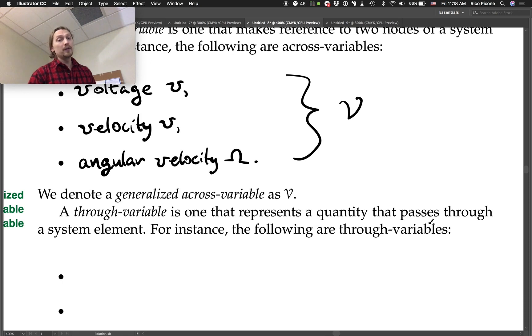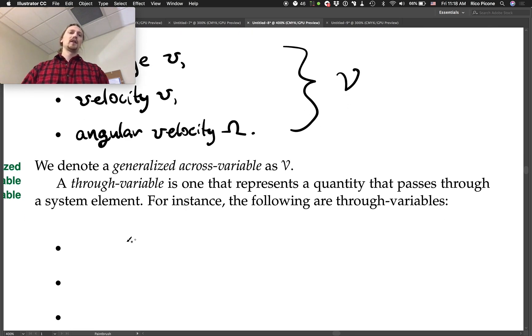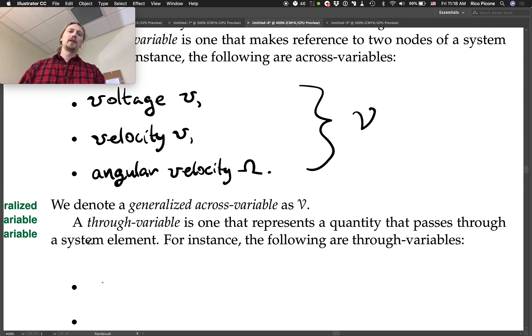A through variable. A through variable is one that represents a quantity that passes through a system element. For instance, the following are through variables. So if for the electronic system and voltage was the across variable, current is going to be the through variable, right? And we're already used to thinking of current as flowing through things. So that's good. That one feels pretty natural.